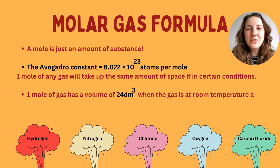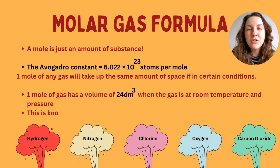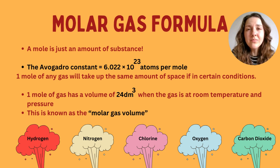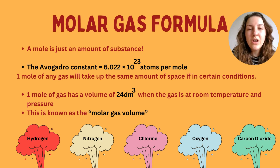So let's talk about moles. We've already spoken about this in a previous video, but just remember that a mole is the amount of substance — it's how many atoms are within a given substance. Avogadro's constant of 6.022 times 10 to the 23 is the number of atoms per mole of substance.